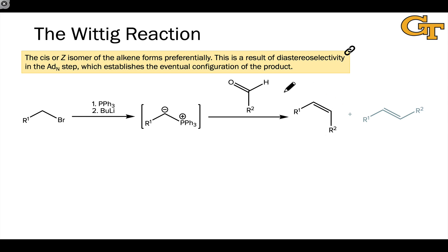The Wittig reaction forms alkenes from ketone or aldehyde starting materials. One of the remarkable things about this reaction is that the cis or Z isomer of the alkene forms preferentially.